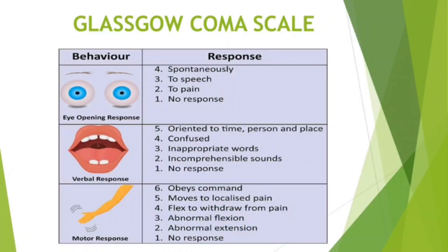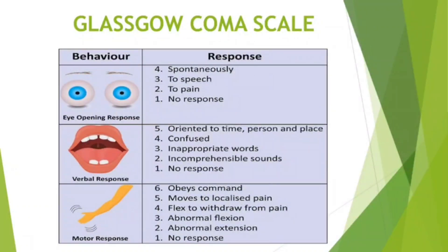Verbal response ranges from 5 to 1: oriented to time, person, and place; confused; inappropriate words; incomprehensible sounds; and no response. Motor response ranges from 6 to 1: obeys command, moves to localized pain, flex to withdraw from pain, abnormal flexion, abnormal extension, and no response.